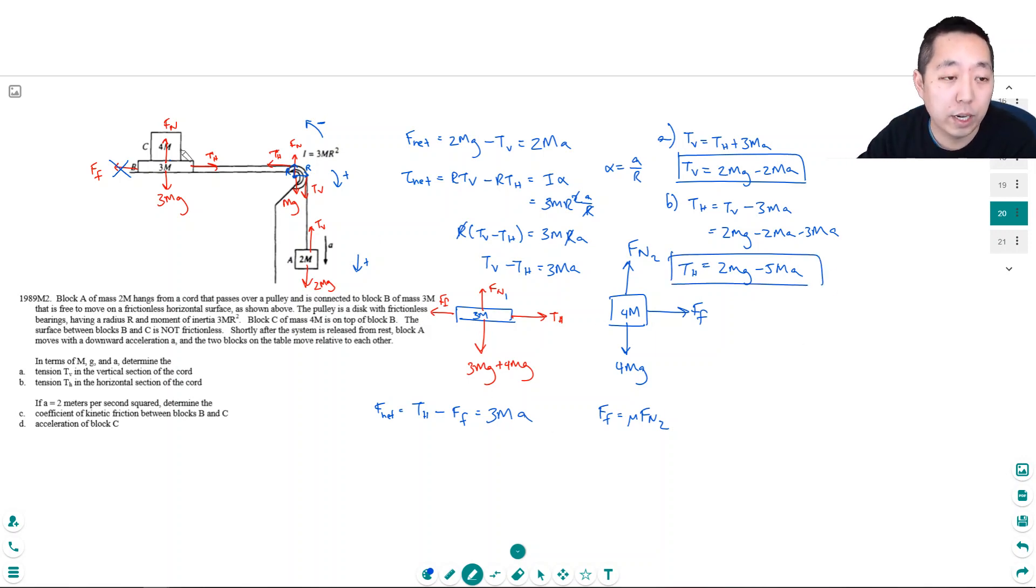So C and D is where I needed to do the free body diagrams. Because if they give you A, then determine these things. So I do have this all right. This setup is all right.